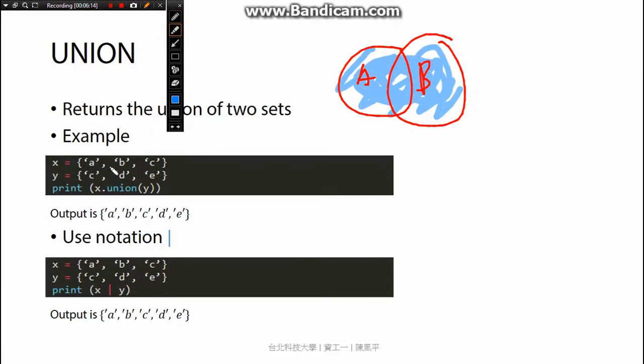So for example, x equals a, b, c, y equals c, d, e. So the union of x and y will be a, b, c, d, e. We also can use the notation - I don't know how to call this notation - it's this notation. Also the same result.